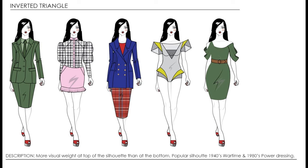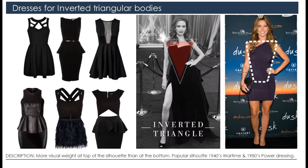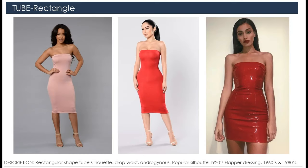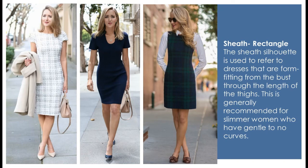The inverted triangle has more visual weight at the top of the silhouette than at the bottom. These are dresses with inverted triangular silhouettes. Rectangle shape is like a tube silhouette which has a drop waist and is very androgynous. These three dresses are rectangular in shape. The sheath dress silhouette refers to dresses that are form-fitting from the bust through the length of the thighs, and is generally recommended for slimmer women who have gentle to no curves.